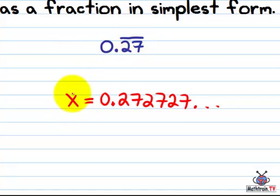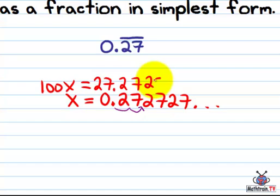So 100 times x is 100x, and then 0.272727 and so on times 100. This moves the decimal point over there. So I end up with 27.272727. And now that's going to be helpful.